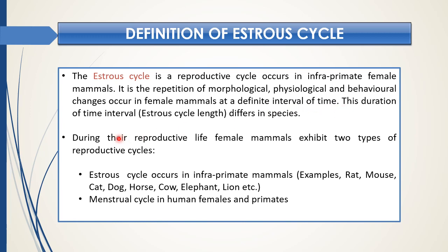During their reproductive life, female mammals exhibit two types of reproductive cycle. One is the estrus cycle, which occurs in infraprimate mammals — for example, mouse, cat, dog, horse, cow, elephant, lion, etc. The other is the menstrual cycle, which occurs in human females and primates.